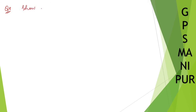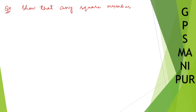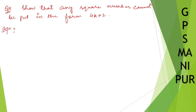The question is question number 8. So that any square number is of the form — any square number cannot be put in the form 4k plus 2. So, any square number cannot be put in the form 4k plus 2.